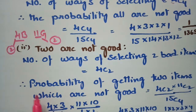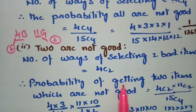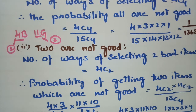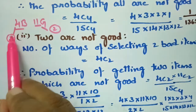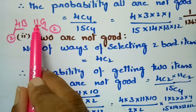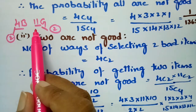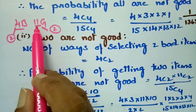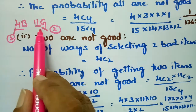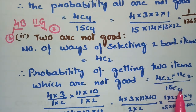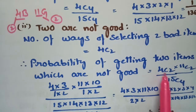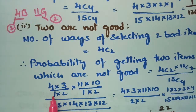The remaining 2 items must be good, selected from the 11 good items, giving 11C2 ways. So the probability of getting exactly 2 not-good items is 4C2 multiplied by 11C2, divided by 15C4.